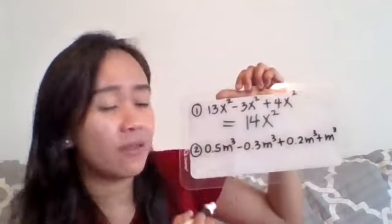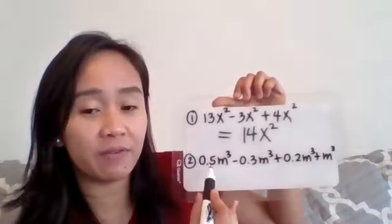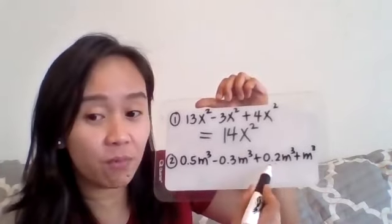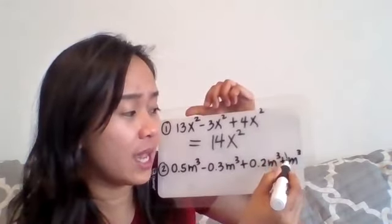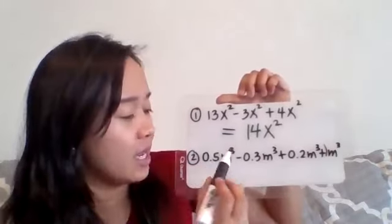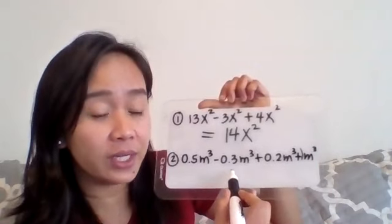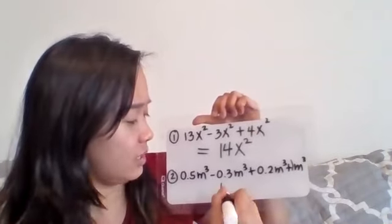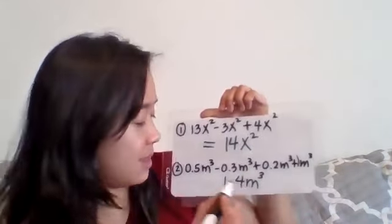If you do 0.5 minus 0.3, take note of the minus, plus 0.2 plus m. If you have just m, don't forget that there's 1 before that, so the coefficient is 1. So 0.5 minus 0.3 is 0.2, 0.2 plus 0.2 is 0.4, 0.4 plus 1 is 1.4m³. Don't forget to write that variable. So that's for the second one.